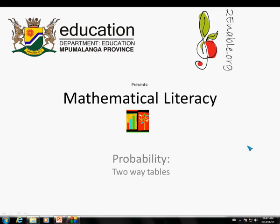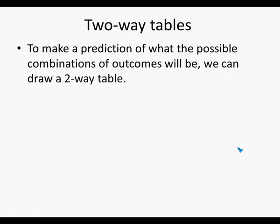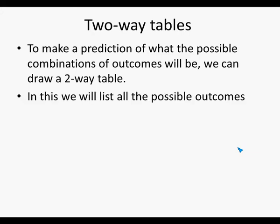To enable.org presents mathematical literacy: probability two-way tables. To make a prediction of what the possible combinations of outcomes will be, we can draw a two-way table, in which we list all the possible outcomes.